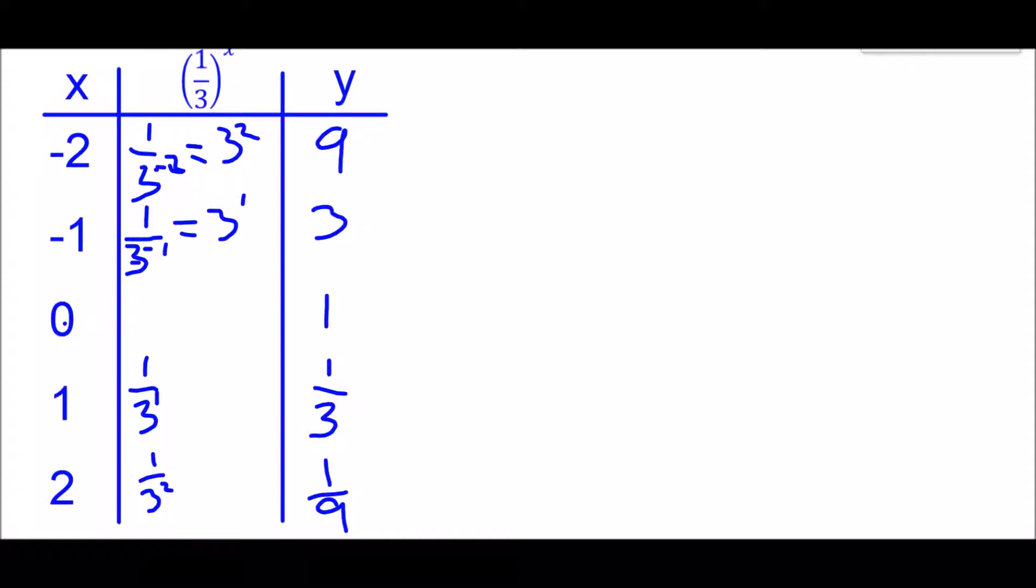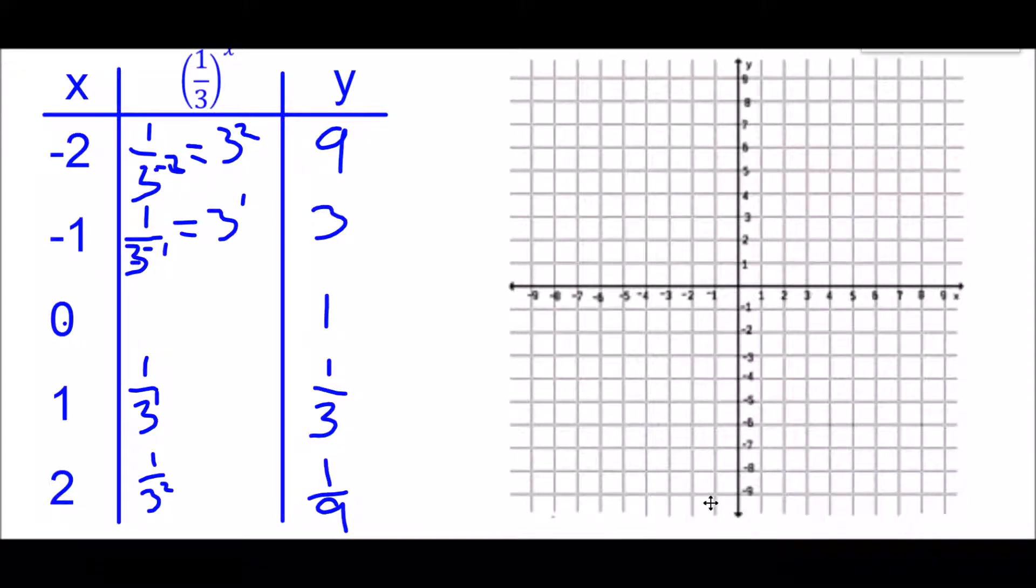Now we can also graph these, similar to example problem number 1. We take the coordinates negative 2, 9 and graph them, then graph the point negative 1, 3, then 0, 1, then 1, one-third, and then 2 and one-ninth, very close to 0 but not quite there.